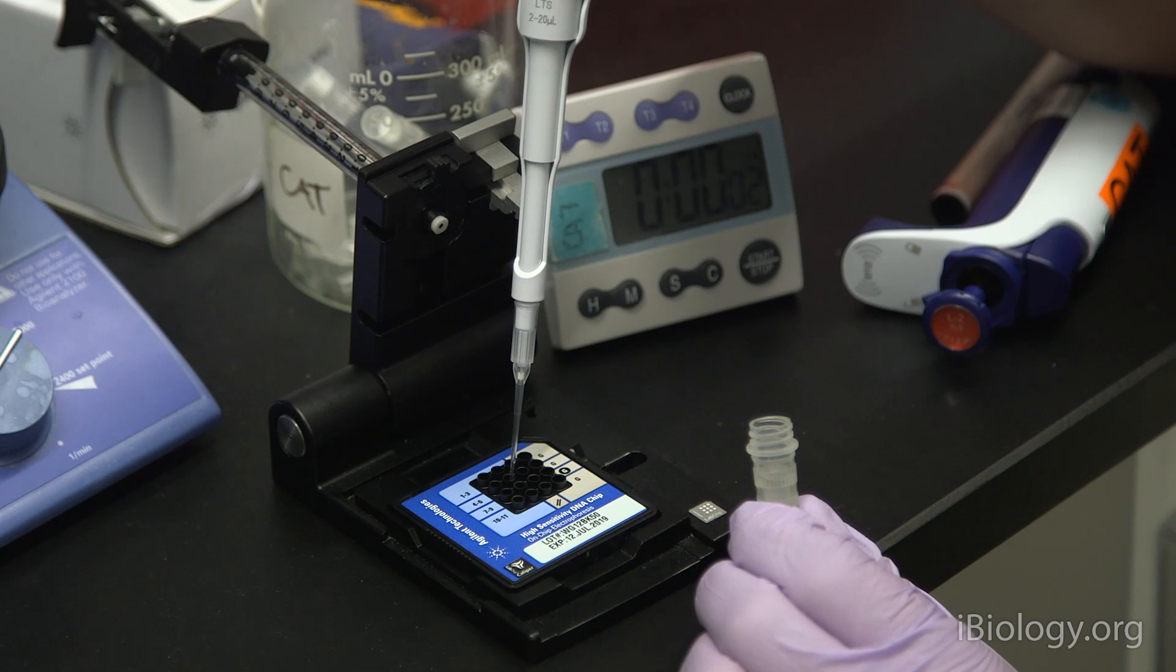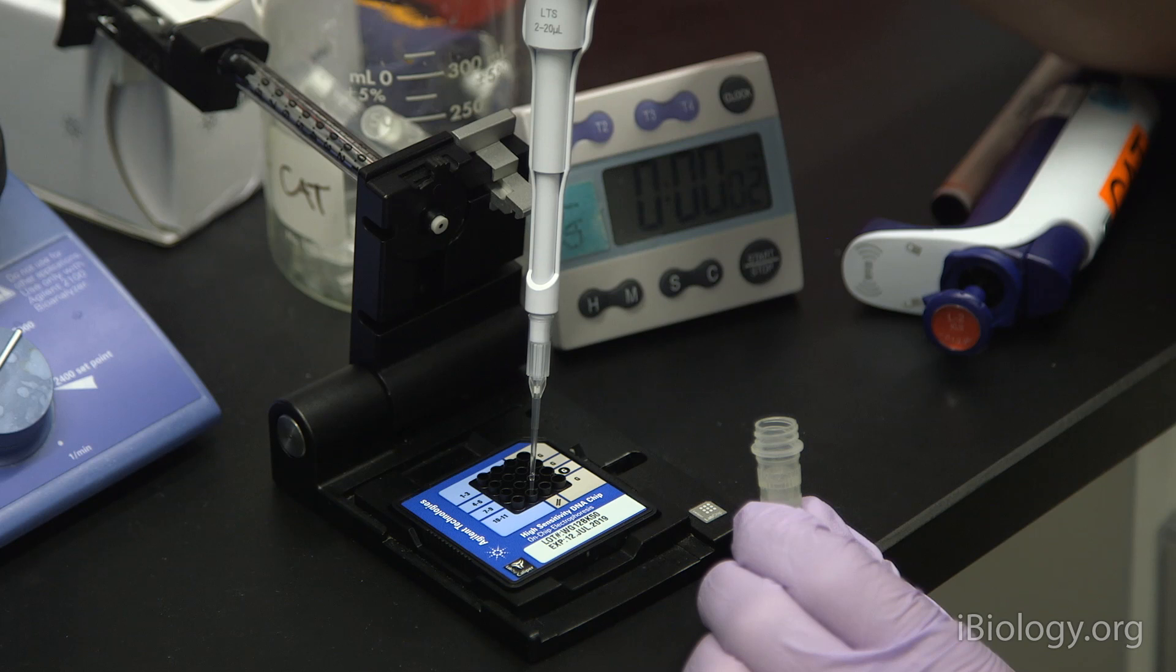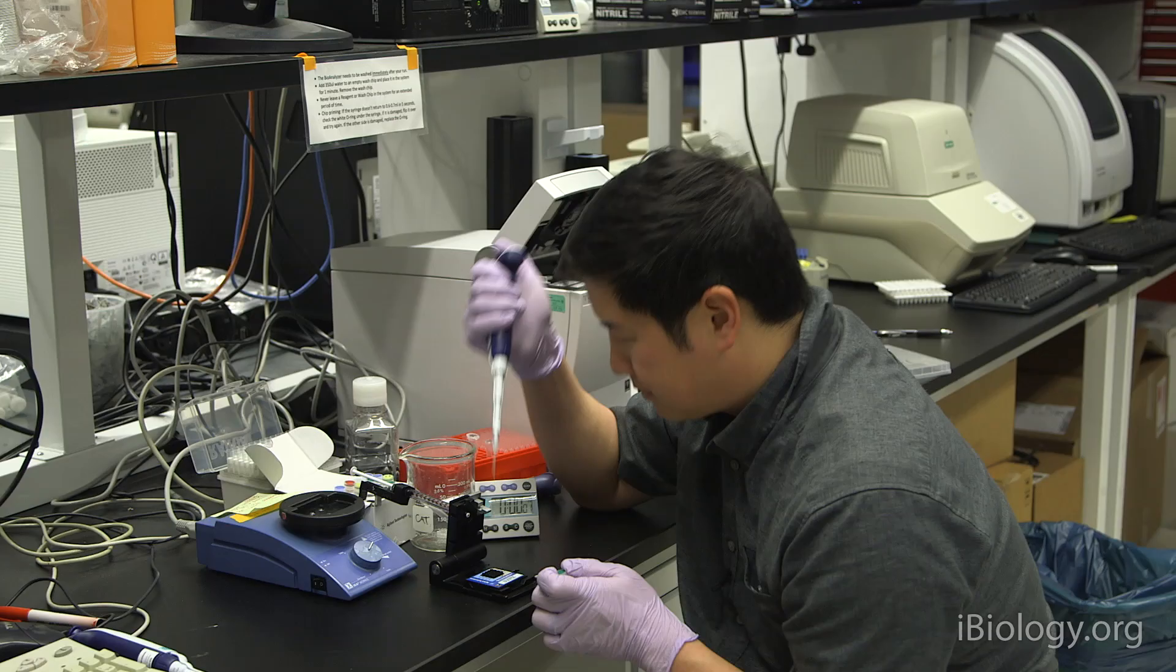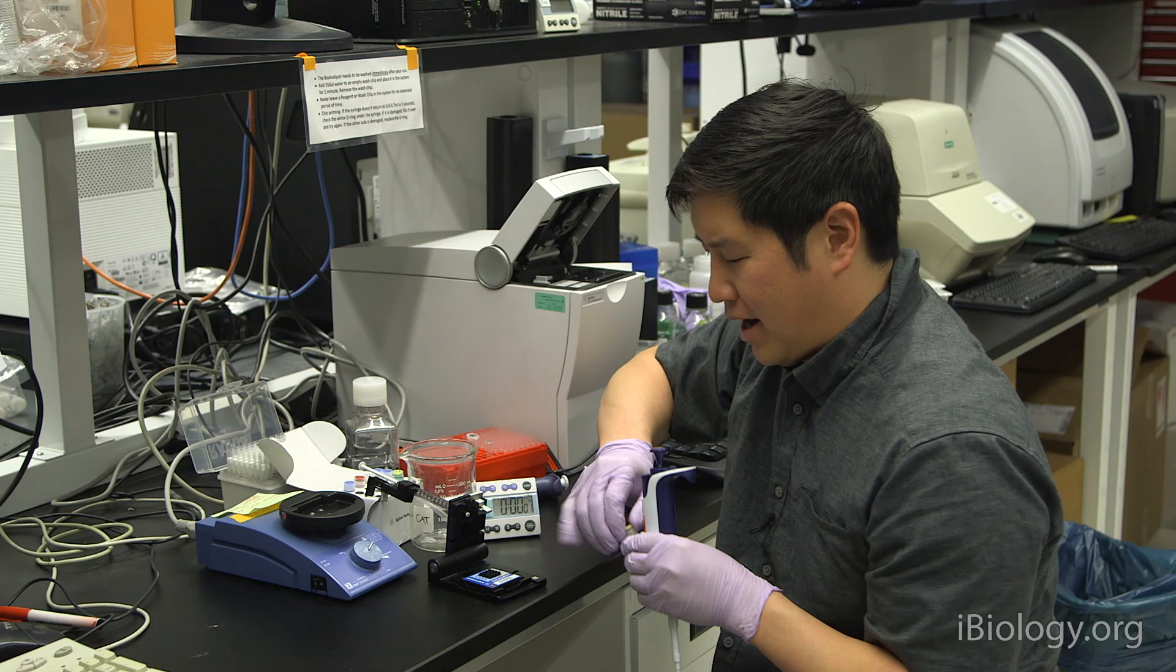Even if you're only running one or two samples, or not a full 11 samples, you still have to add marker to all of the lanes, or to all of the wells. The next step, we'll add one microliter of the ladder to the ladder well, and this is marked on the chip.